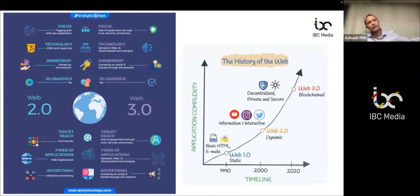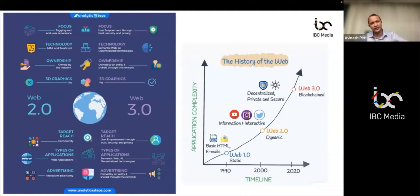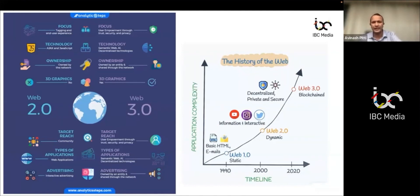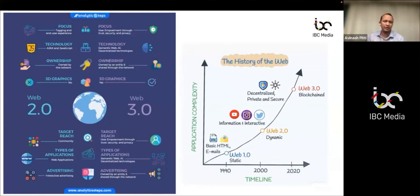The history moves from read-only to dynamic applications with a client-server architecture — even your Google search history is stored on Google's data servers. Now we're moving to Web 3, where the ownership of my activity stays with me, the data is secure, and the data is immutable — I cannot delete that data.